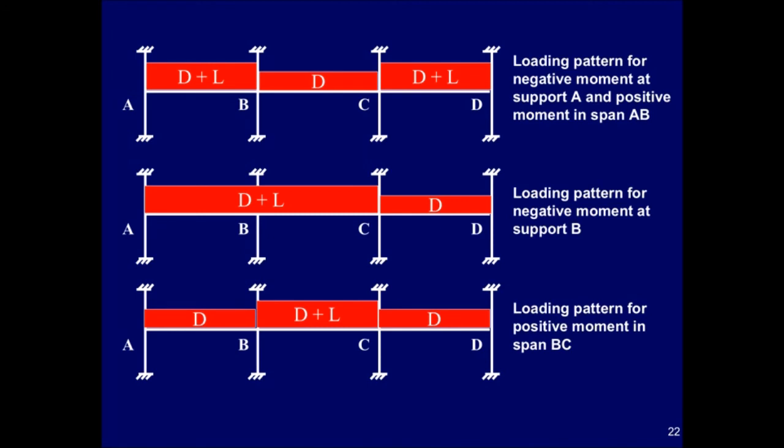Finally, in the third loading pattern, the live load is applied to the interior span only. This pattern produces the maximum positive gravity moment in span BC.